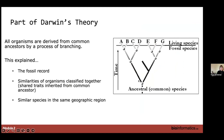The idea was that all organisms were derived from common ancestors by a process called branching. This explained the fossil record, similarities of organisms classified together, and traits inherited from a common ancestor. You would have an ancestral species and then branching, with the end of a branch reflecting some extinct species, and then living species as the leaves of the tree at the end.